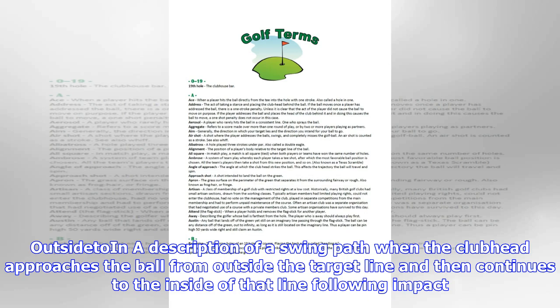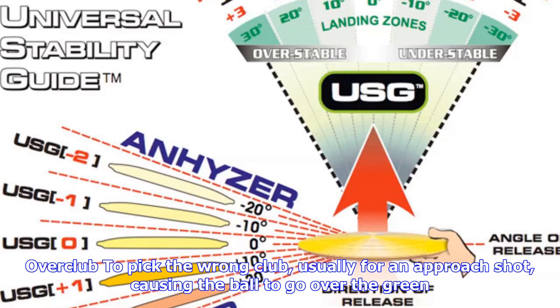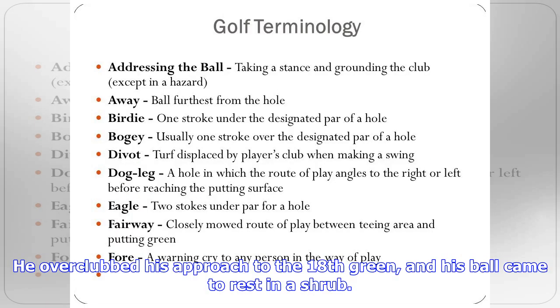Laid off: when the swing plane flattens out at the top of the backswing, it causes the club to point to the side of the target and the face to close. His PGA professional watched him hit a few balls and then told him that he was getting the club laid off at the top of his backswing.